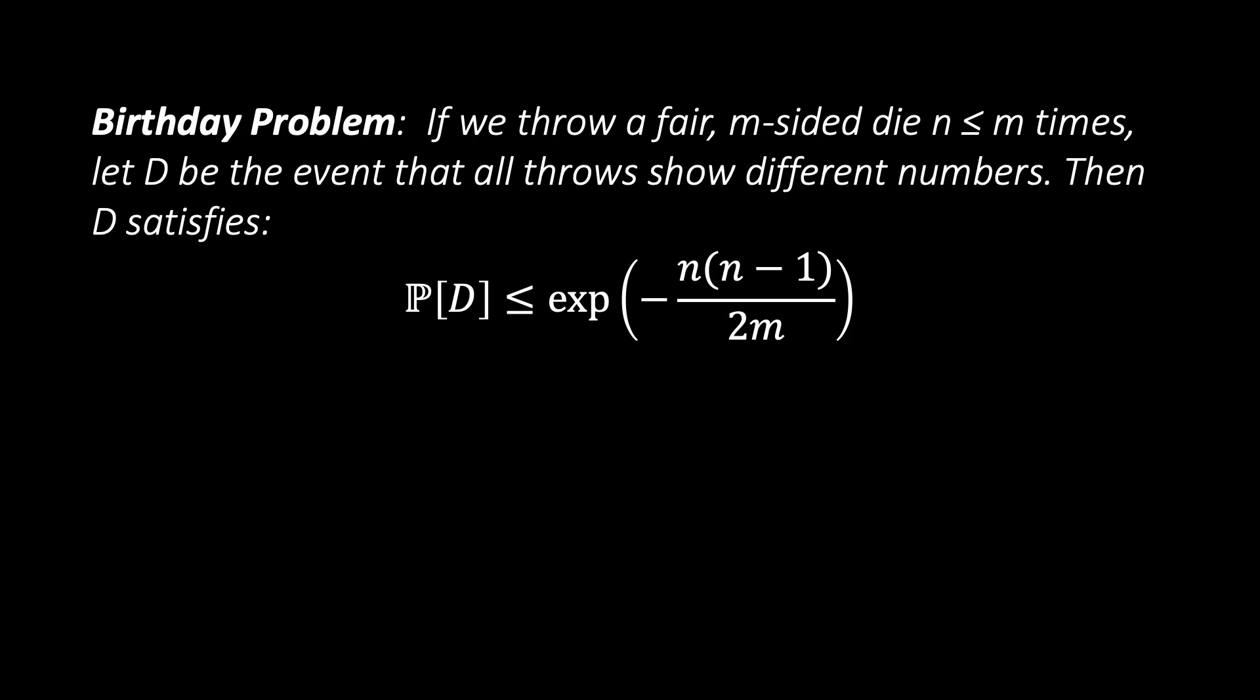Let D be the event that all throws of the die show different sides. This is the same as every person in a room having a different birthday. If we compute this, we get that the probability of a collision is bounded as shown here. So, what does that mean for our problem? Can you estimate what the relation between M and N should be if we want a 50-50 chance of not having a birthday collision? Pause the video and take a moment to think about this.